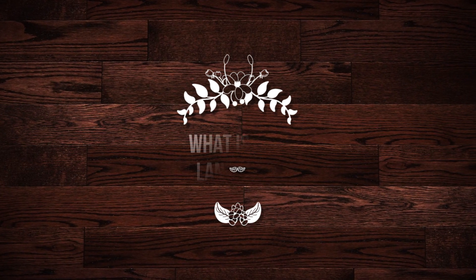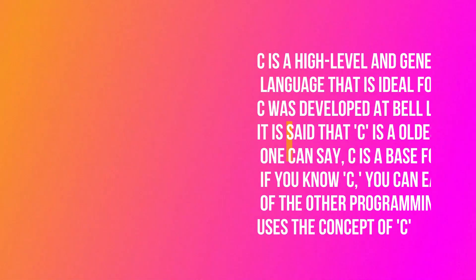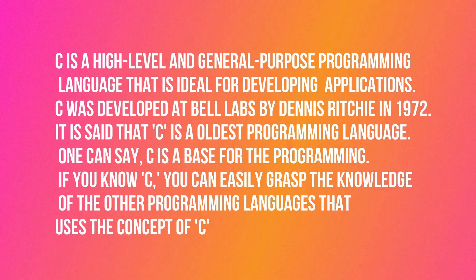Now let's begin with the main topic: what is C language? C is a high-level language and a general-purpose programming language that is ideal for developing applications. C was developed at Bell Labs by Dennis Ritchie in 1972. It is said that C is the oldest programming language and is a base for programming.